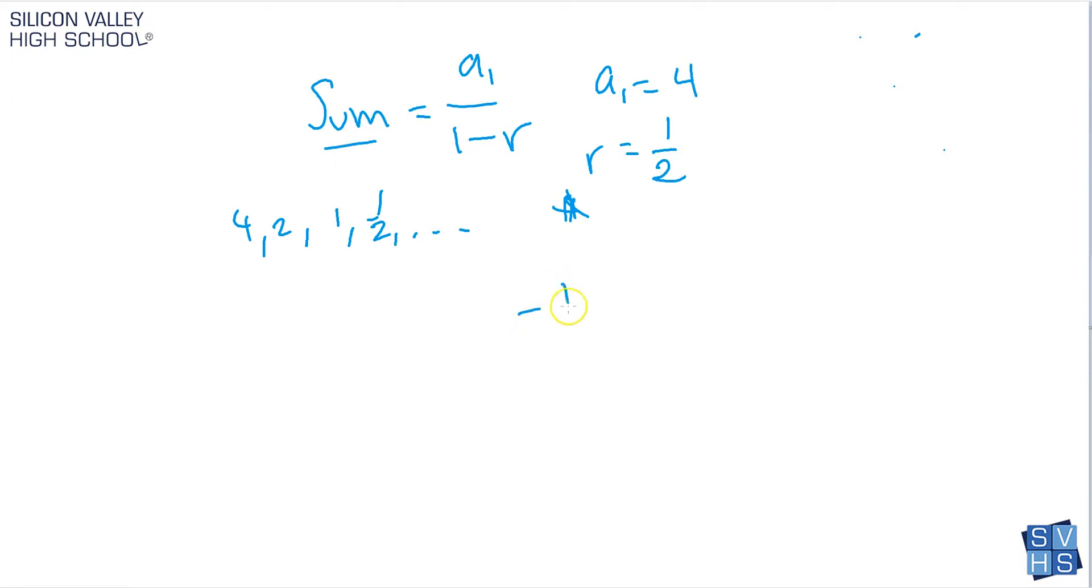r has to be between negative 1 and 1. And even this little notation is confusing, so it's better to hear it verbally. r has to be between negative 1 and 1. And if it is, then yes, you can go ahead and find the sum of that infinite geometric series.